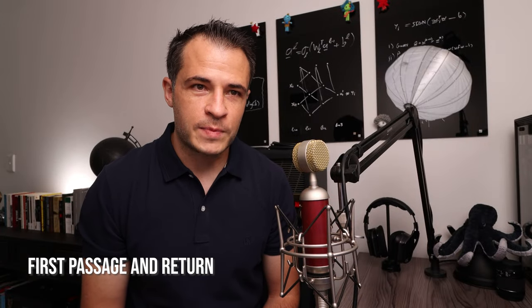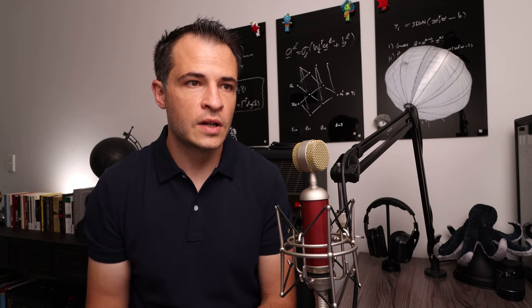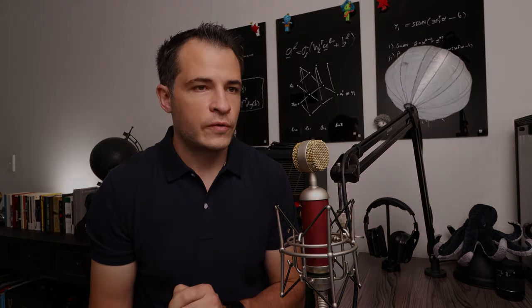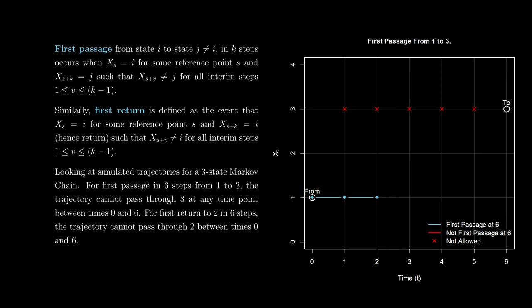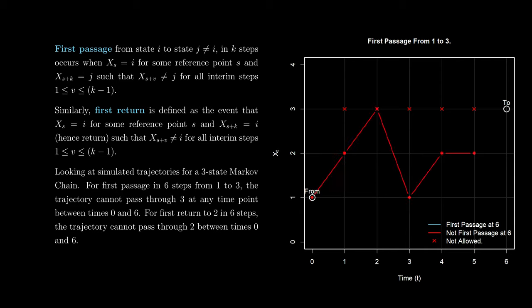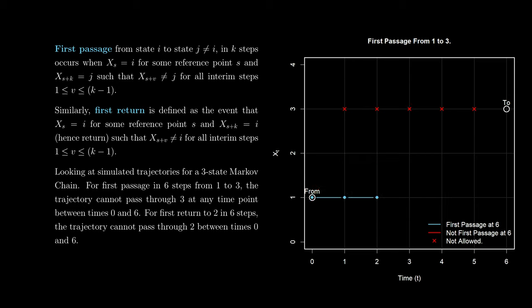Although there are many interesting temporal event types, one that shows up quite often in practical applications is so-called first-passage, and also first-return events. First passage from state i to state j, where j ≠ i, in k steps, occurs when the process is in state i at time s, and k steps later is in state j at time s+k, but such that the process may not assume state j for any of the interim time points between s and s+k.